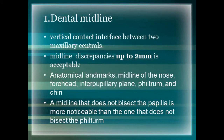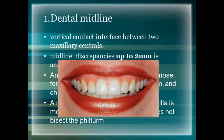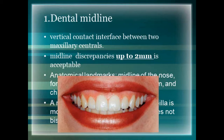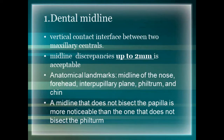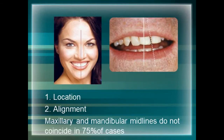There are certain anatomical landmarks which help us evaluate the dental midline: midline of the nose, forehead, interpupillary plane, philtrum, and chin. Among these, the philtrum is the most reliable anatomical landmark. As seen in the picture, the facial midline and dental midline are mismatched — the line passing through the philtrum and the dental midline do not match. Also, a midline that does not bisect the papilla is more noticeable than one that does not bisect the philtrum. In another picture, the dental midline is slanting as well as shifted, giving a much more unaesthetic appearance.